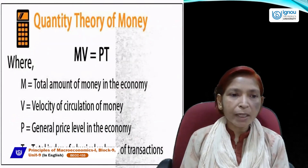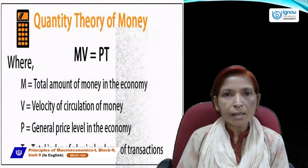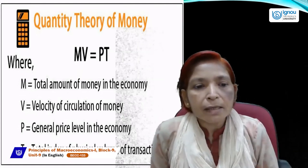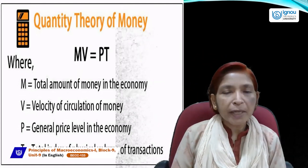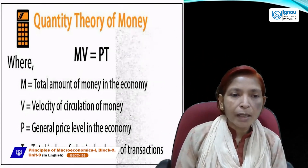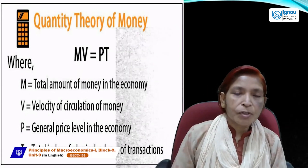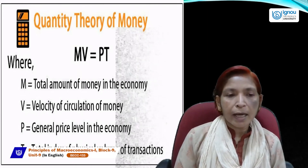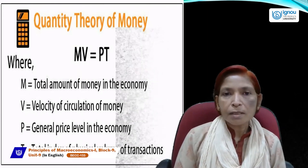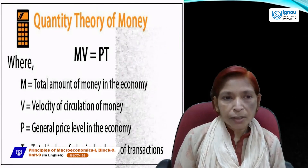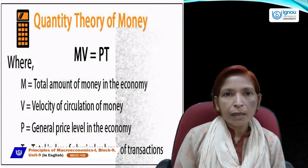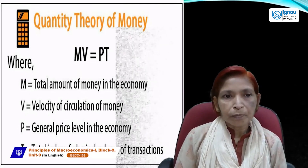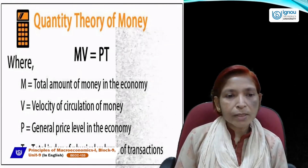The equation of Quantity Theory of Money is MV = PT, where M is money supply, V is velocity, P is general price level, and T is transactions. MV denotes money supply and PT denotes money demand. According to Irving Fisher, money supply always equals money demand, so MV = PT.